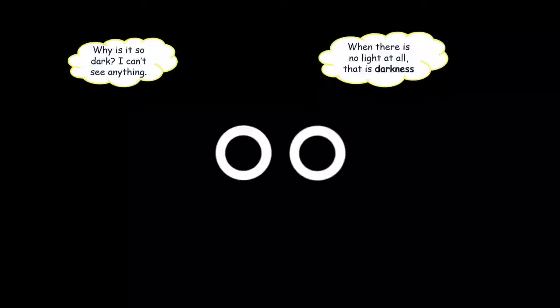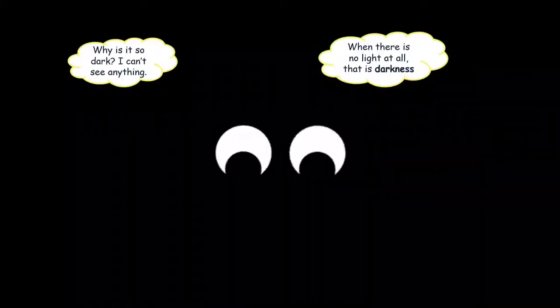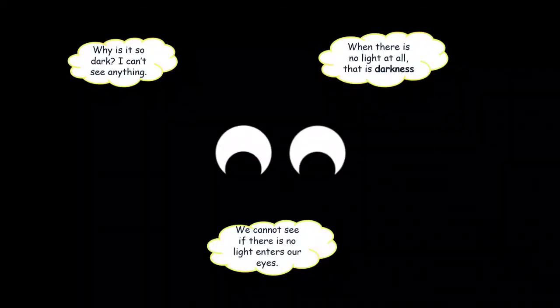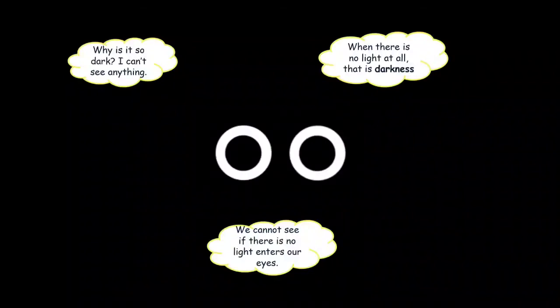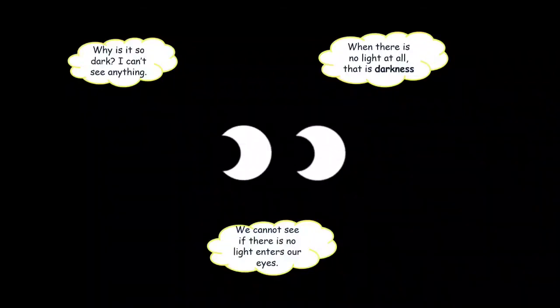When there is no light at all, that is darkness. Why can it happen? I will tell you the reason. We cannot see if there is no light enters our eyes. So that's why when you are in the dark room, you cannot see anything.